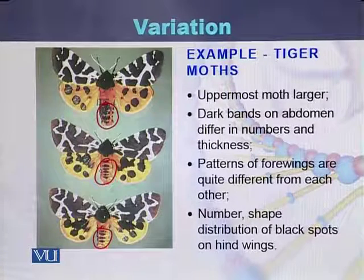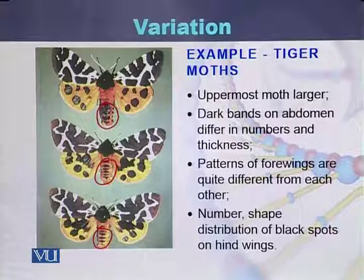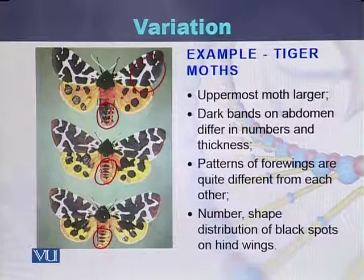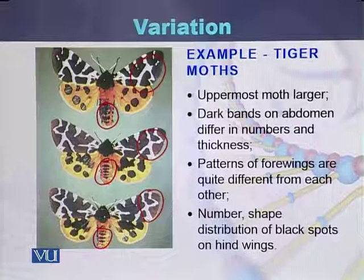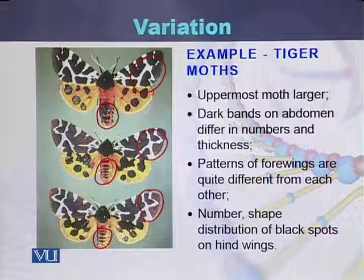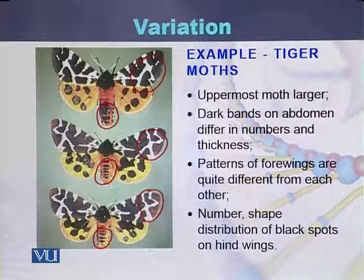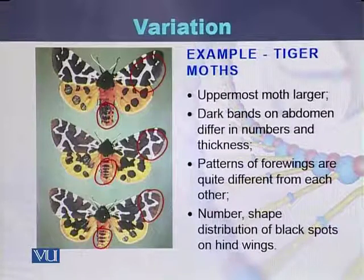The pattern of the forewings is quite different among them — the uppermost moth has a different pattern, while the lower two have a different pattern on their wings. In addition, we can also see differences in the number and shape of black spots present on the hind wings.